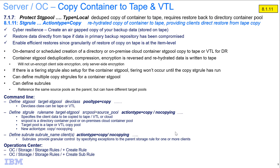Hi, welcome to this demo of IBM Spectrum Protect version 8.1.11. This is going to cover the new copy container to tape and VTL. This function allows for the copy of either directory or on-premise cloud container storage pools to VTL or tape, and we will rehydrate the data when we write it out to tape so that it can be recovered directly from the tape by the client.